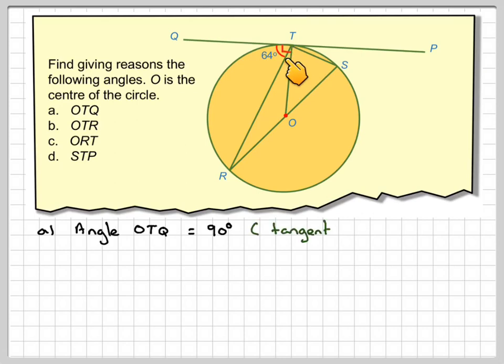So that will be equal to 90 degrees, this angle that we want to find. Because this is the radius and this is the tangent, and the tangent and the radius are always at 90 degrees to each other.